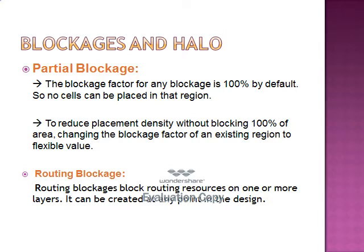The blockage factor for any blockage is 100% by default, so no standard cells can be placed in that region. Partial blockages provide flexibility by reducing placement density without blocking 100% of the area. Changing the blockage factor of an existing region to a flexible value is a better option. Partial blockages are used to reduce cell density by assigning a specific blockage factor to a region.